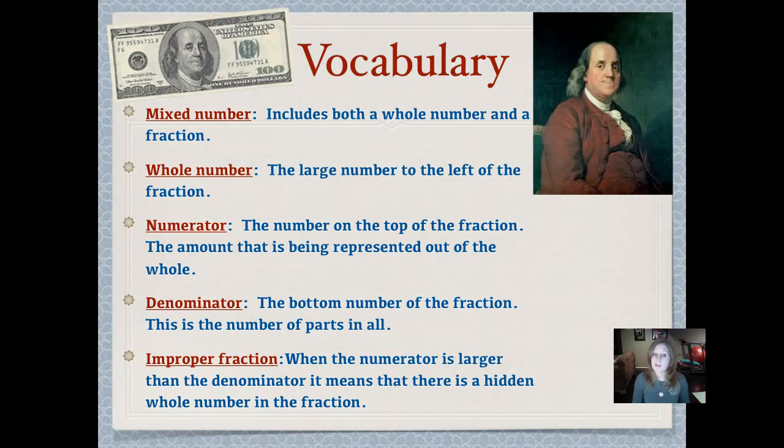The denominator is the bottom number of the fraction. That's the number of parts in all. And an improper fraction, which isn't really a fraction at all because it has whole numbers hidden in it, is when the numerator is larger than the denominator.